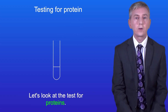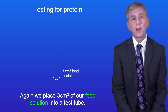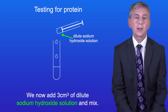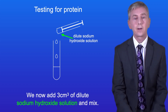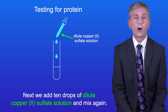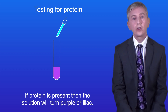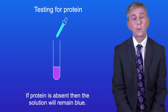Now let's look at the test for proteins. Again we place 3 cm³ of our food solution into a test tube. We add 3 cm³ of dilute sodium hydroxide solution and mix. Next we add 10 drops of dilute copper(II) sulfate solution and mix again. If protein is present then the solution will turn purple or lilac, and if protein is absent then the solution will remain blue.